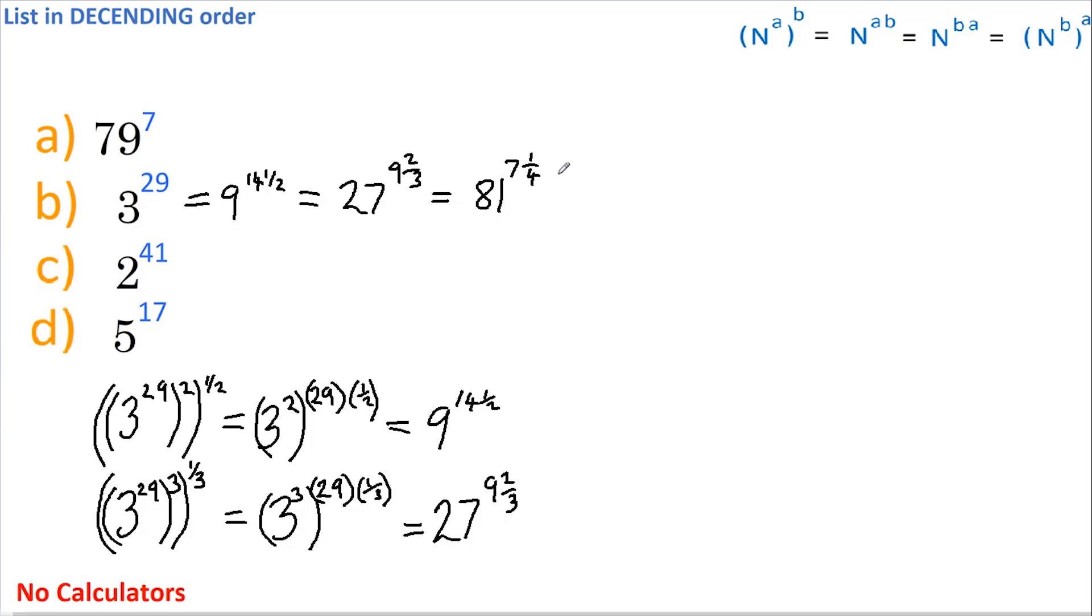So why have I done this? Well, if we now bring 79 to the power of 7 across to here and compare these two, the base of a is lower than the base of b, and the power of a is also lower than the power of b. If they're both lower, then a must be smaller than b.